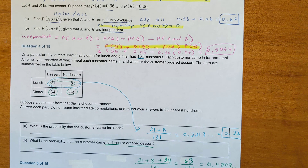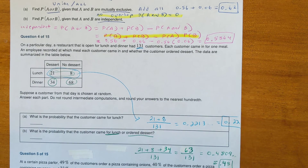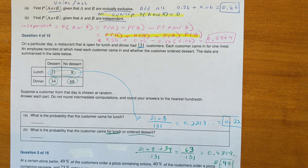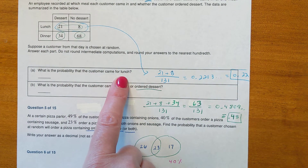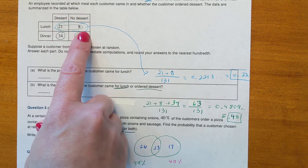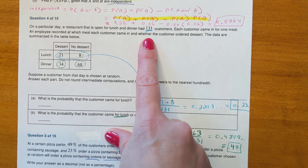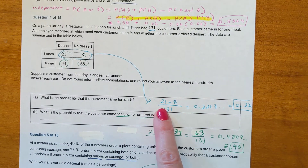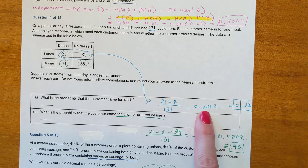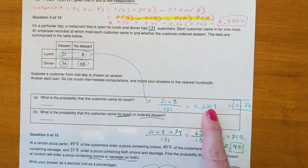Problem four: a restaurant open for lunch and dinner had 131 customers. An employee recorded which meal each customer attended and whether they ordered dessert, summarized in a table. A customer from that day is chosen at random. The probability the customer came in for lunch: 21 ordered dessert at lunch and 8 did not, so (21 + 8) / 131 = 29/131 ≈ 0.22.